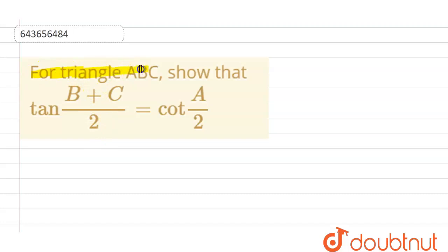We have the question in which for a triangle ABC, show that tan of (B+C)/2 equals cot of A/2. Now we can start with LHS, so LHS we have tan of (B+C)/2.